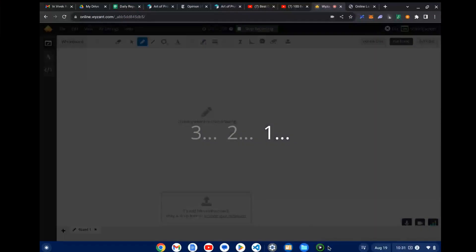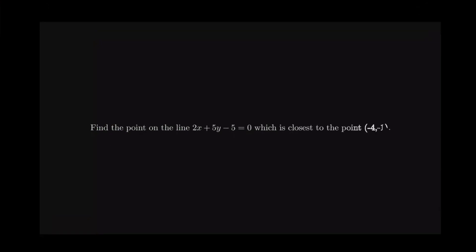Okay, let's take a look at our problem. We have a line given there and a point at negative four, negative one. So we want to find the point on the line that's closest to that point.